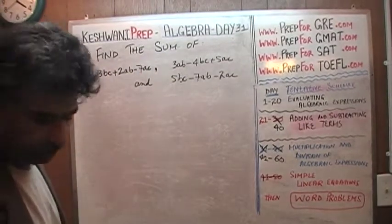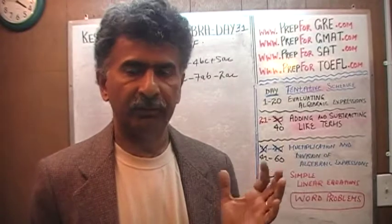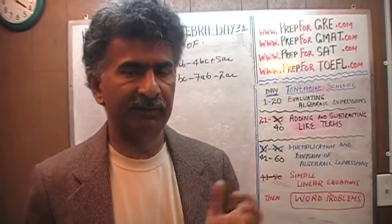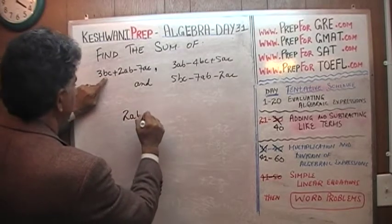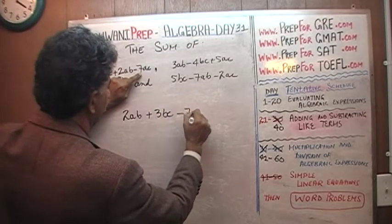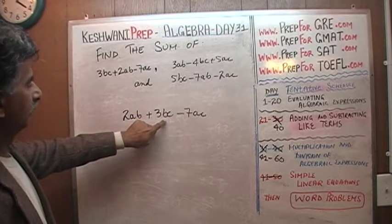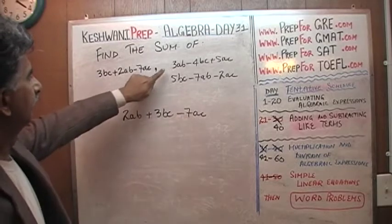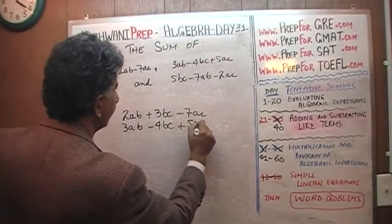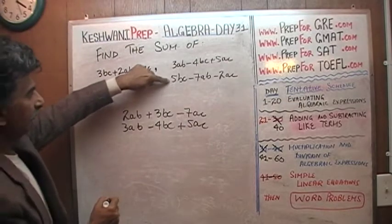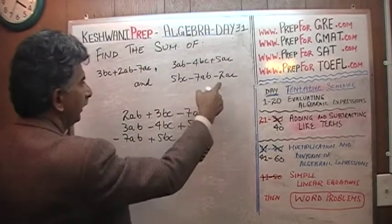The first problem is already on the blackboard. We are asked to find the sum of these three expressions, so we have to make sure that we line up the like terms. The convention in algebra is that you write variables in alphabetical order. So 2AB goes first, then BC, then AC. The second expression is 3AB minus 4BC plus 5AC, and the third expression is positive 5BC, negative 7AB, and negative 2AC.